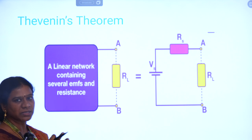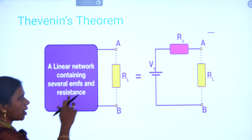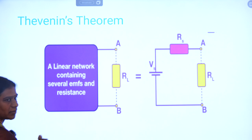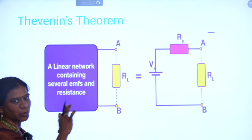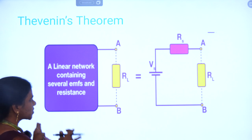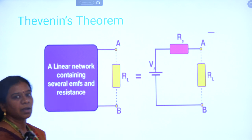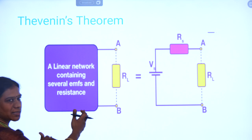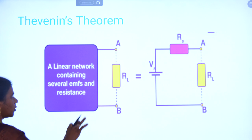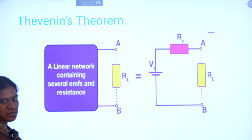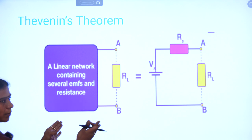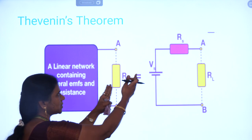That simple network consists of voltage source Vs (which is VOC, the open circuit voltage across the open circuit terminals) in series with Thevenin's resistance Rs (which is Rth, the looking-back resistance across the open circuit terminals). Any linear bilateral network can be replaced by a voltage source Vth in series with Thevenin's resistance Rth. In the case of AC circuits, it will be Vth in series with Zth, the Thevenin's impedance.